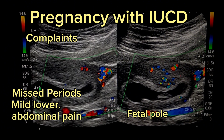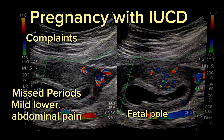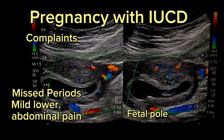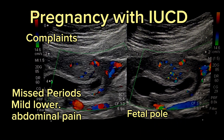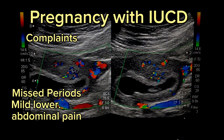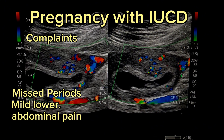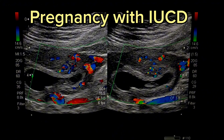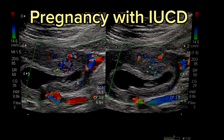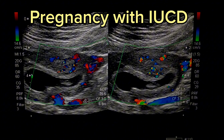Urine pregnancy test was positive. Ultrasound findings confirmed intrauterine gestation of 7 weeks plus with IUCD visible in situ. In this presentation, no cardiac activity could be seen.